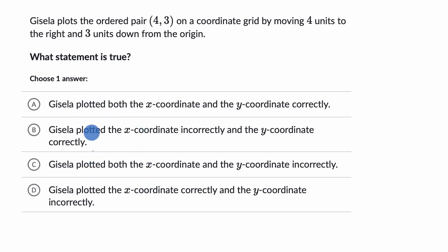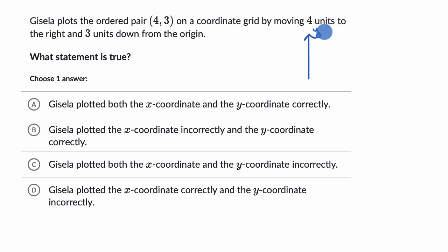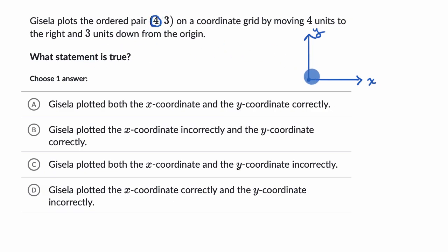Before I even look at the choices, let's think about how we would approach it if we had to graph four comma three. Let me draw some coordinate axes here — that is my y-axis, this right over here is my origin, and that is my x-axis. So if I had to graph four comma three, the first coordinate is the x-coordinate, which tells us how much to the right we move. So I'm moving four from the origin to the right — let's say that is four right over there.